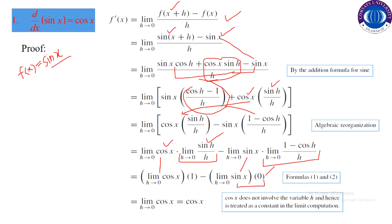This term with cos h minus 1 over h goes to zero. The limit as h approaches zero of sine h over h is 1. Cos x does not involve the variable h and is treated as a constant in the limit computation. So we are left with cos x times 1, which equals cos x. The rest of the trigonometric function derivatives you have to prove using this definition.